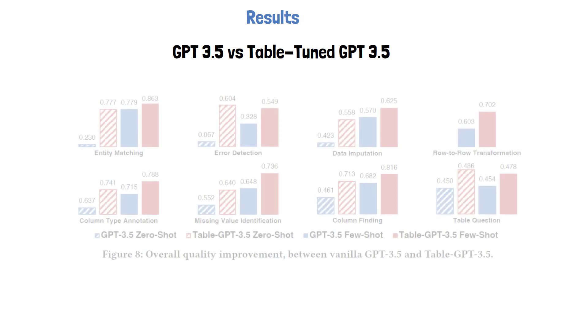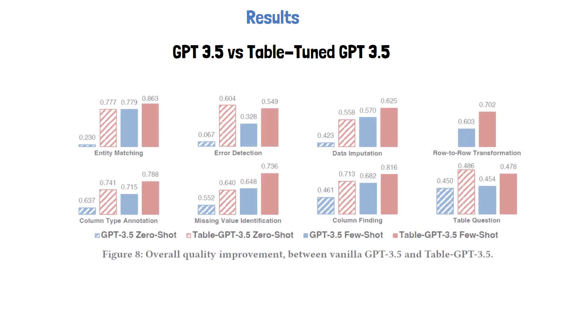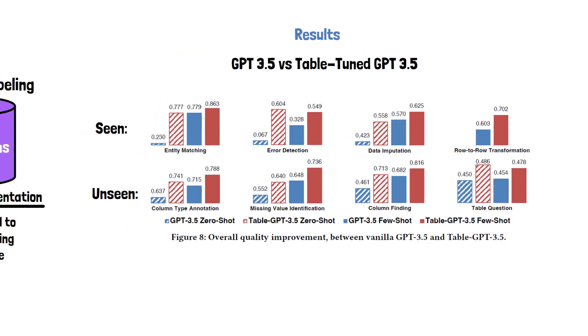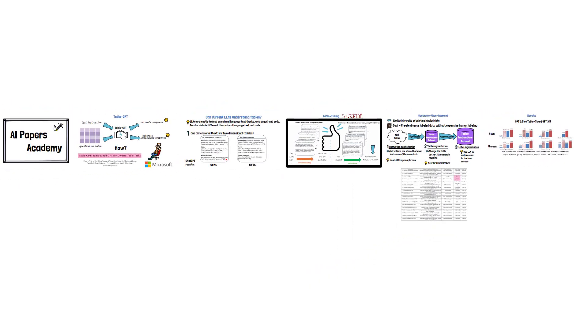What if we compare GPT-3.5 rather than ChatGPT, which is instruction-tuned? A similar figure shows GPT-3.5 in blue and the table-tuned version in red. It similarly achieves better performance and is also able to generalize well to unseen tasks, as seen in the 4 charts at the bottom. Thank you for watching, and I hope to see you again in the next video!